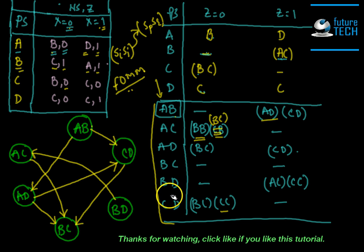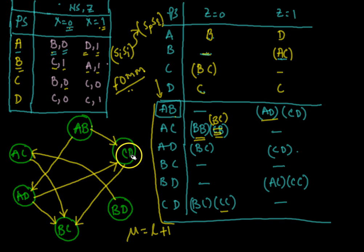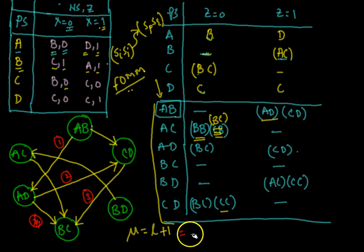Now we find the order μ of this machine, defined as the longest path plus one. Checking the paths: b-d to a-c is length 1, a-c to b-c is length 2. Another path: a-b to a-d is 1, a-d to c-d is 2, c-d to b-c is 3. So the longest path is 3, and the order of the machine is 3 + 1 = 4.